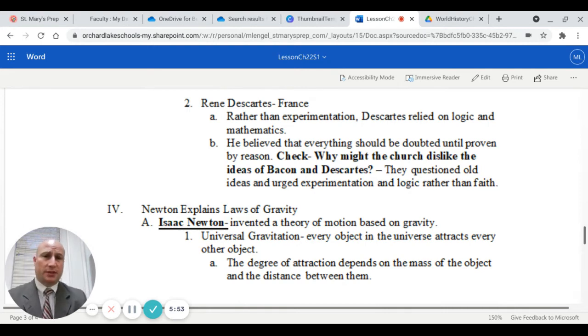Rene Descartes was from France. But rather than experimentation, Descartes relied on logic and mathematics to try and prove things. He believed that everything should be doubted until proven through reason. Why might the church dislike the ideas of Bacon and Descartes? Well, they were skeptical. They questioned old ideas and urged experimentation and logic rather than just relying on faith.